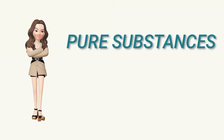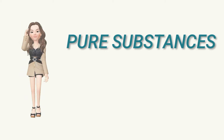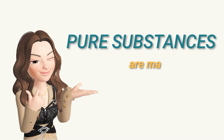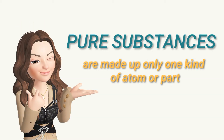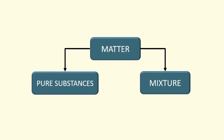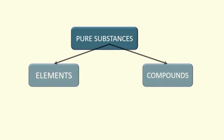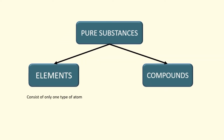Now, to easily understand pure substances, we are going to focus on the definition that pure substances are substances that are made up of only one kind of atom or particle. There are two types of pure substances: elements and compounds. All elements are pure substances because they only have one type of atom, while compounds are pure substances that have only one type of particle.